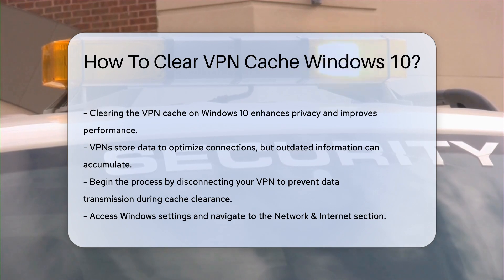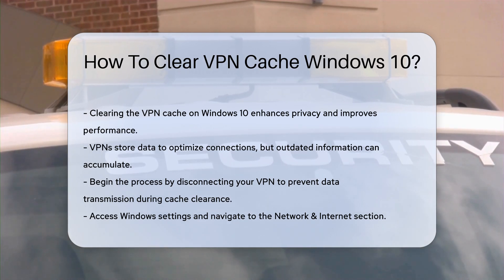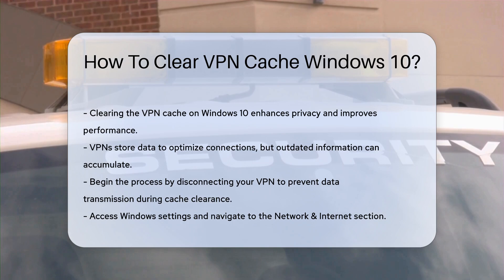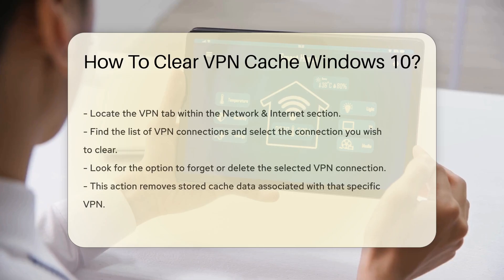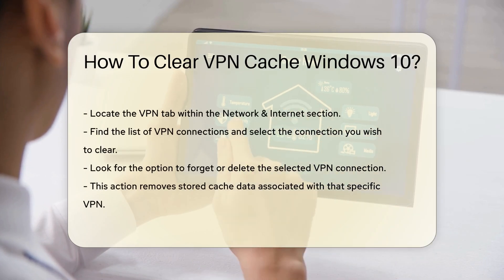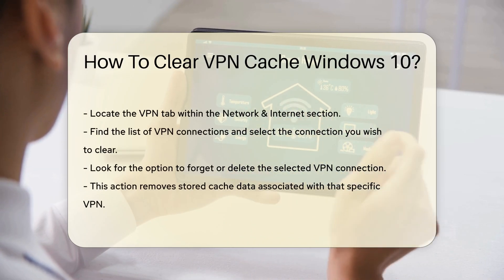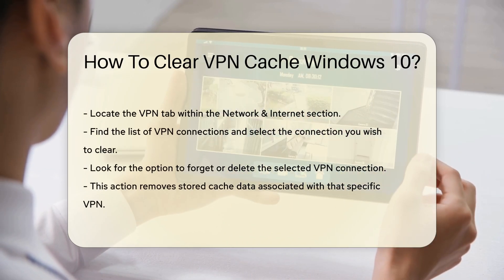Next, access the Windows settings. Navigate to the Network and Internet section. Within this section, locate the VPN tab. Here, you will find the list of VPN connections.